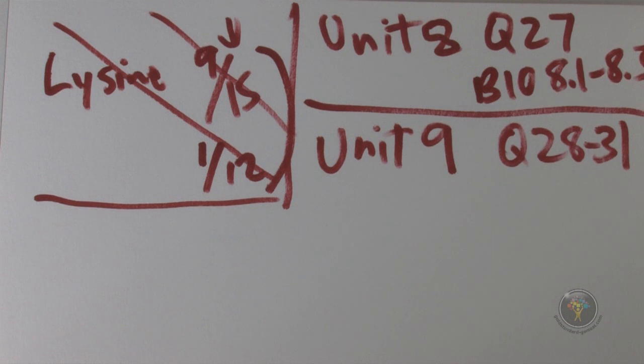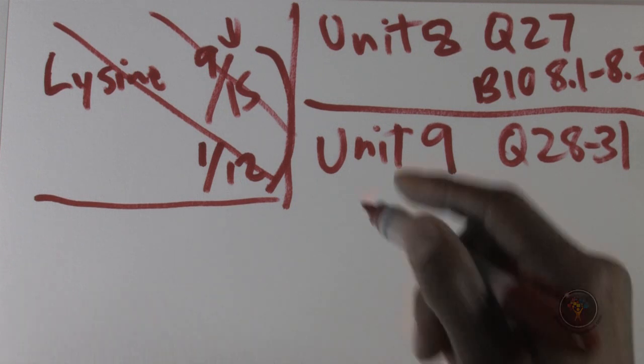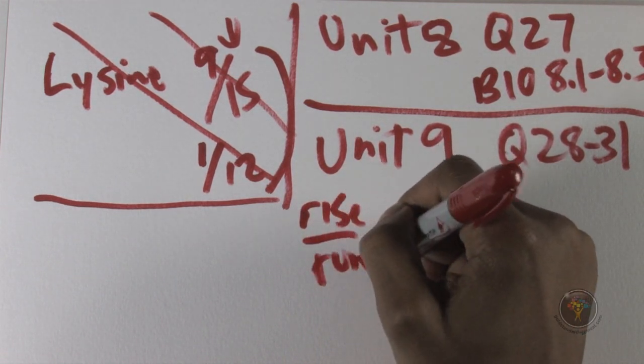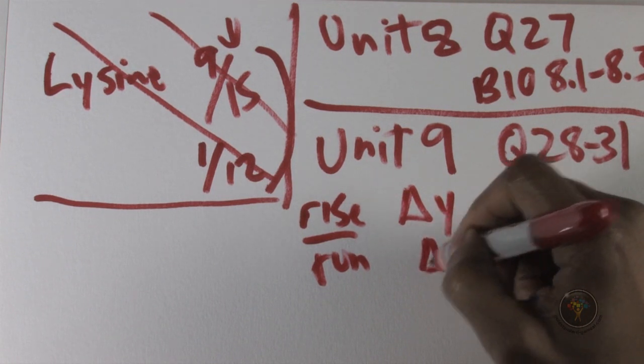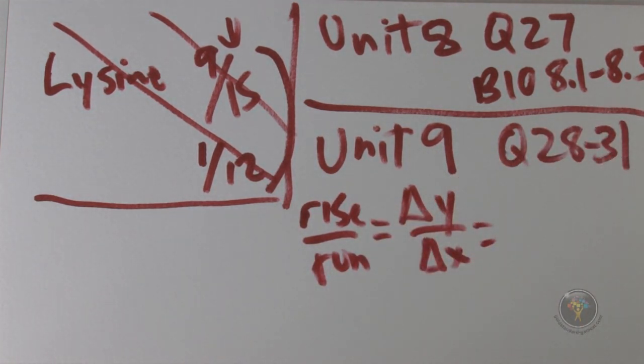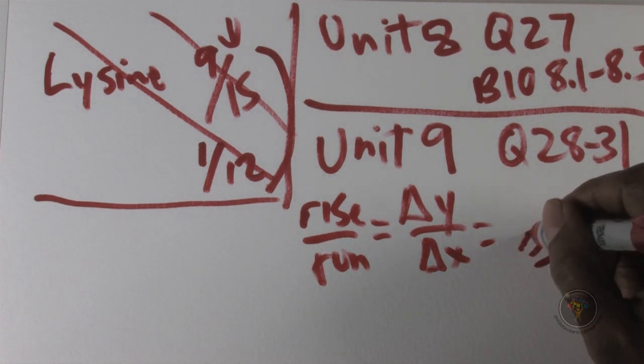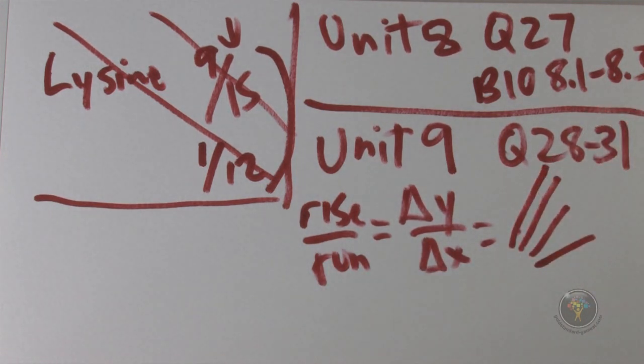They're asking for the greatest increase in thoracic temperature per minute. Per minute means rate. That means what is the rate of change, something over something. We know that rise over run gives us delta y over delta x, and this gives us a slope. If we have thoracic temperature over time, that gives us the rate of increase. If we want the greatest rate, we want the slope with the greatest, most acute positive slope.